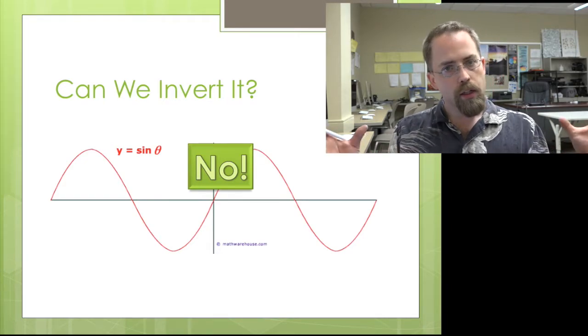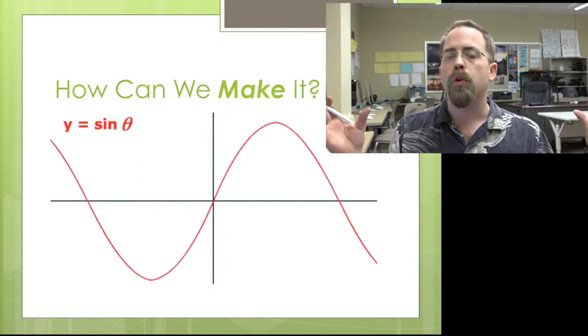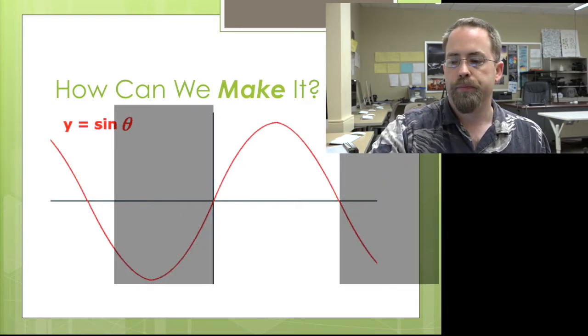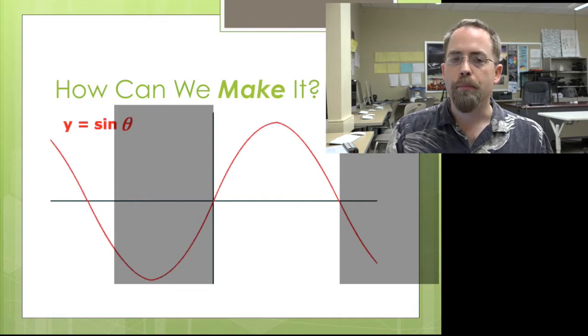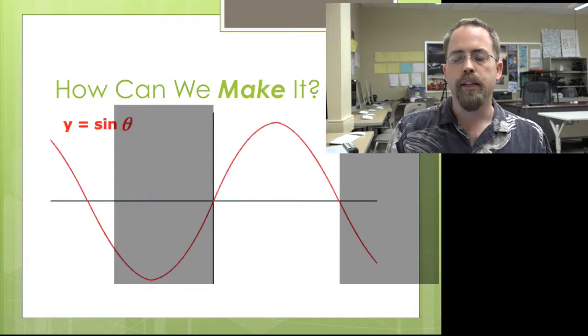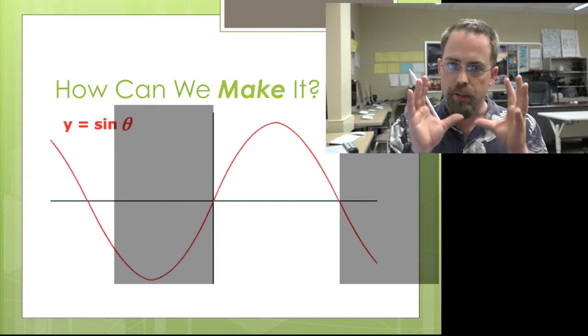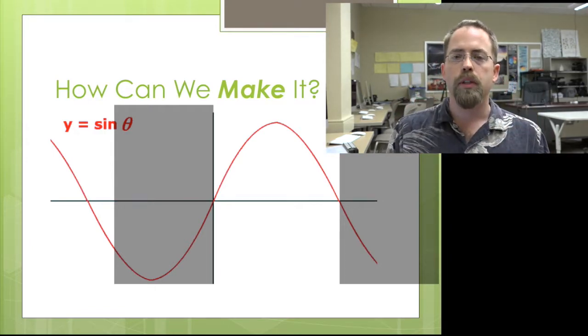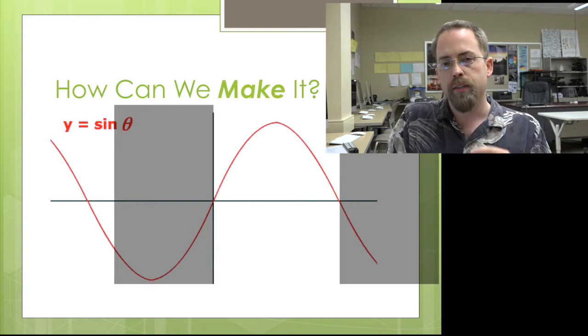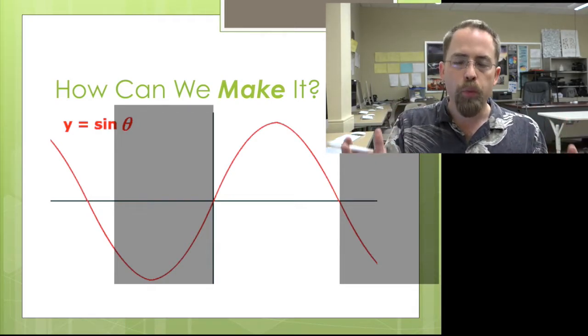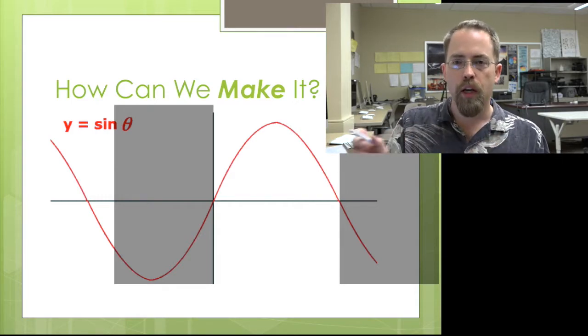Well, we can limit our scope. We can say we're only going to do part of the domain. So it's not invertible, but we can make it by limiting ourselves here. So is this a good chunk? Is this a good limited slice of the domain that will enable us to flip it on its side? No, it's not, because again, we're still failing that horizontal line test.